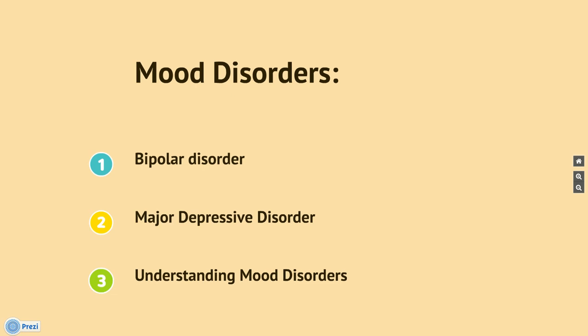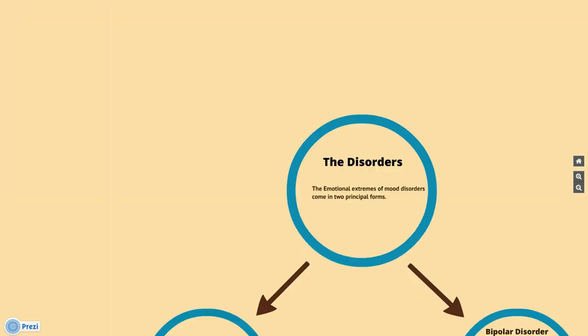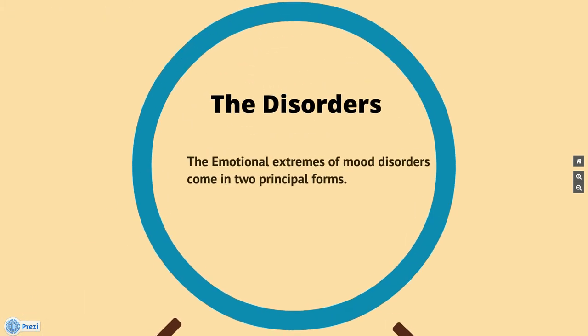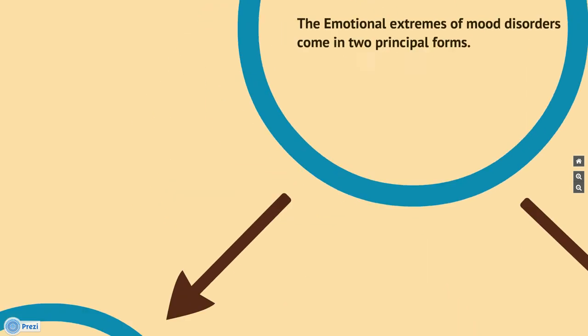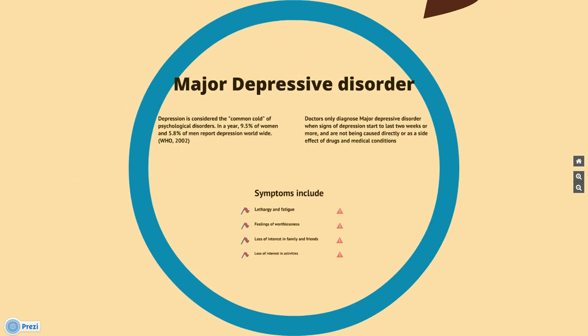Mood disorders include bipolar disorder and major depressive disorder. Understanding mood disorders is important, and that is why scientists and medical doctors at the UCLA Medical Center are studying mood disorders. The emotional extremes of mood disorders come in two principal forms. The first is major depressive disorder.